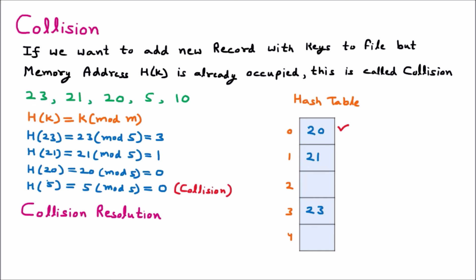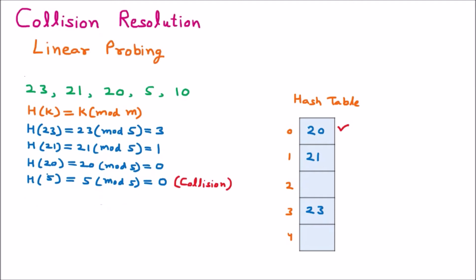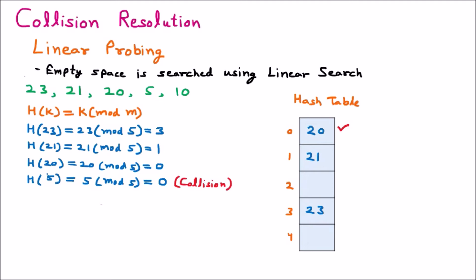To handle this, we use collision resolution techniques. Whenever a collision happens and the address is already occupied, these techniques are applied. There are two techniques: the first is linear probing and the second is chaining. We will now discuss these techniques one by one, starting with linear probing.